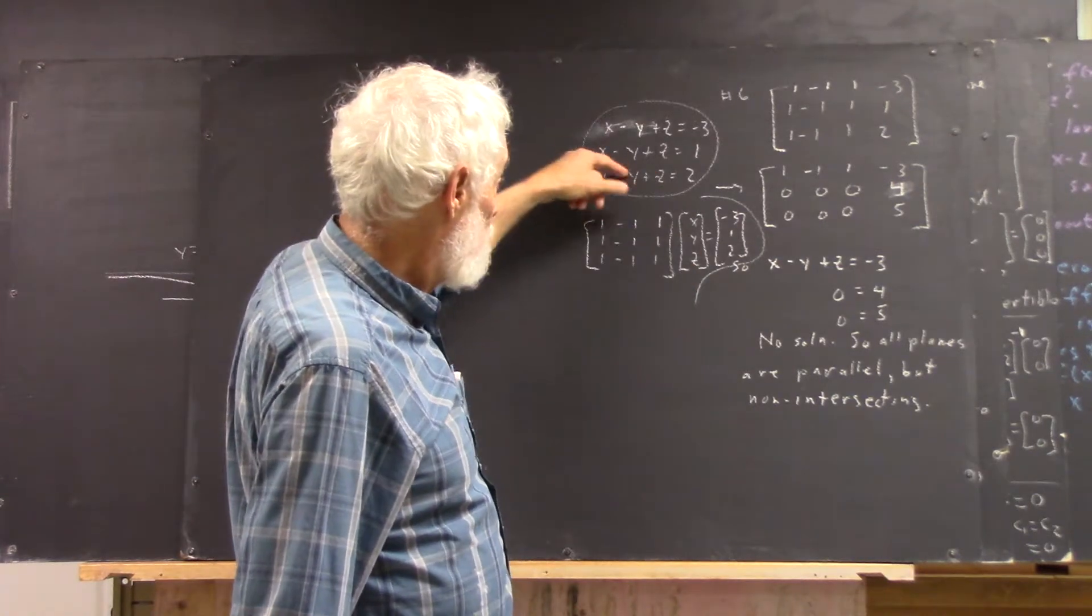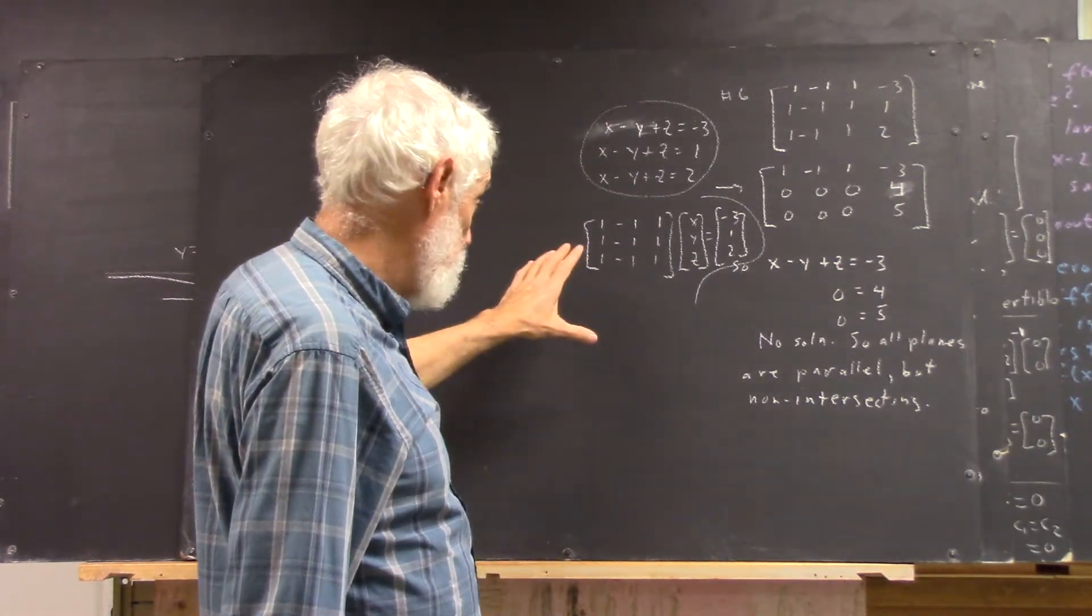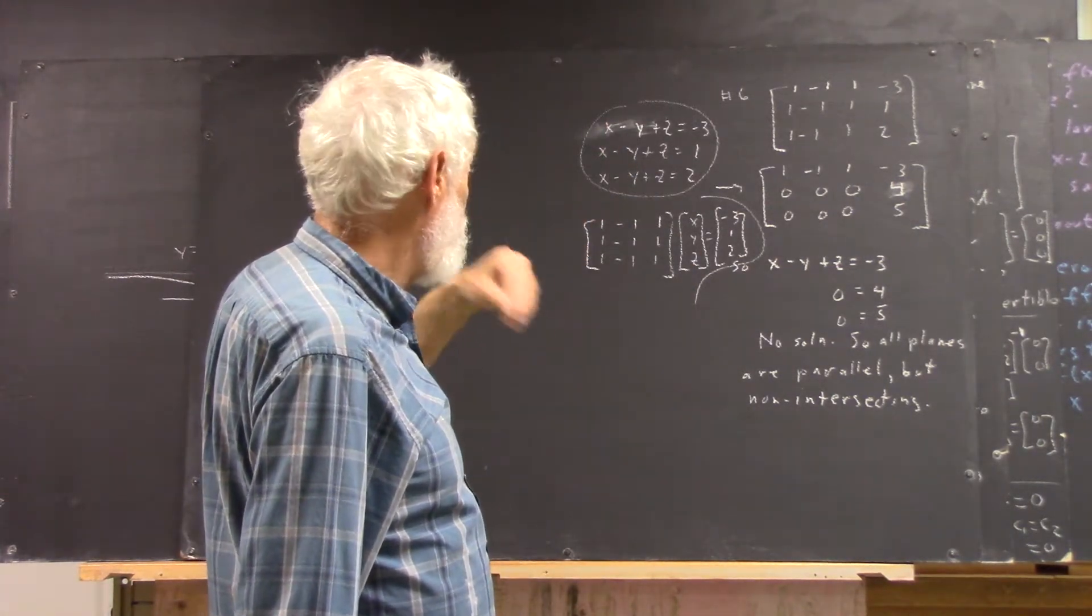On the first level, these equations can't all be true. Matter of fact, if any one of these is true, the others are false. Because we have the same expression x minus y plus z on the left-hand side. If x minus y plus z is negative three, then it isn't one and it isn't two. If x minus y plus z is one, then it isn't negative three and it isn't two.